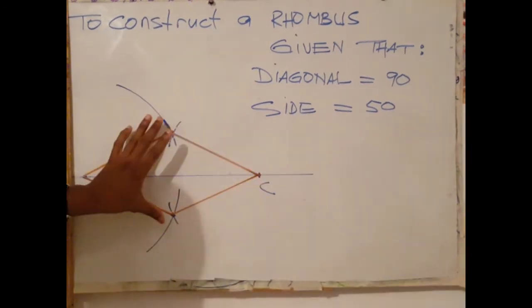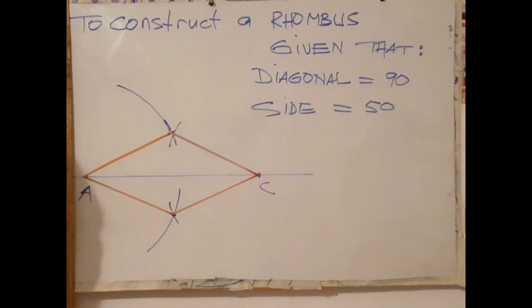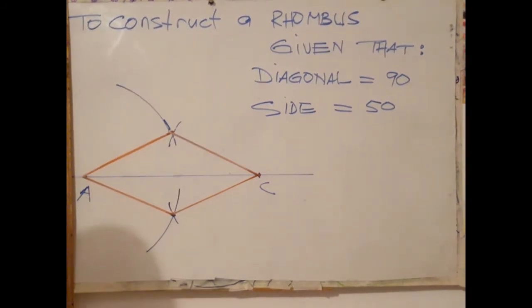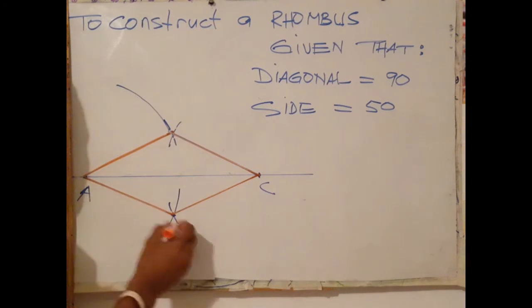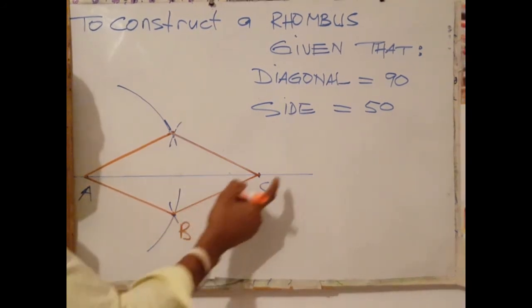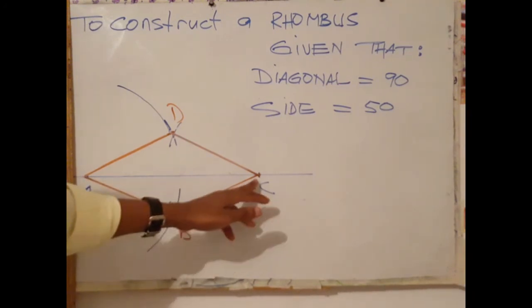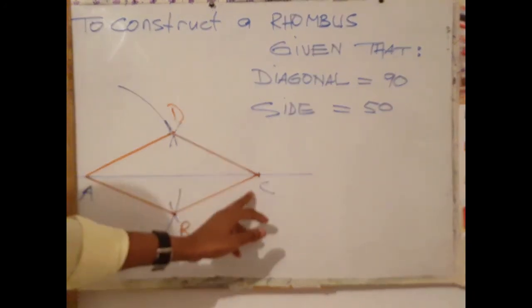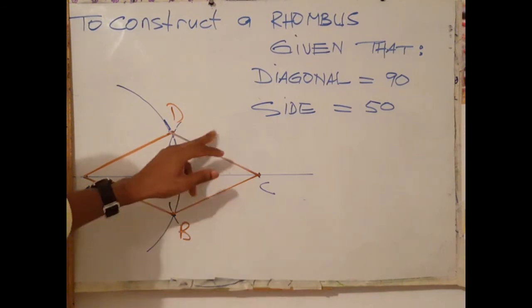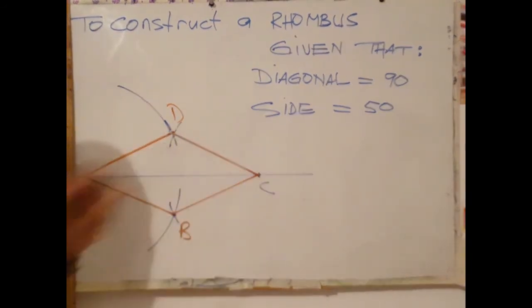This is a skinny rhombus, so there we go. A, B, C, and D. So there we go, our rhombus having diagonal 90 millimeters, each side 50 millimeters.